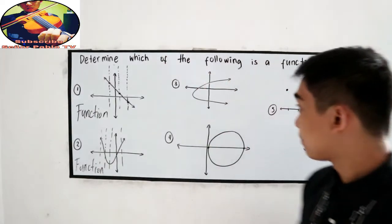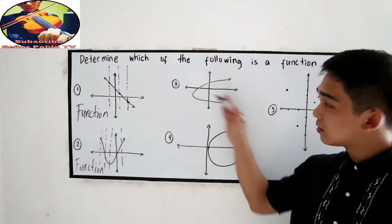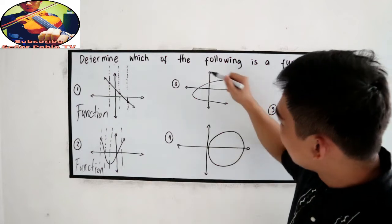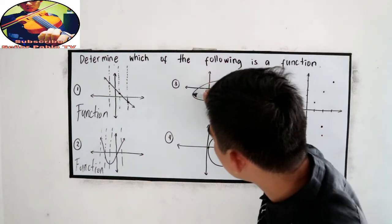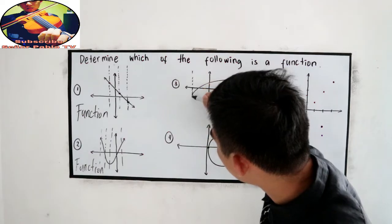Next, number three. A parabola that opens to the right. Vertical line test. So this is our vertex. So let's start at that point, so one point.